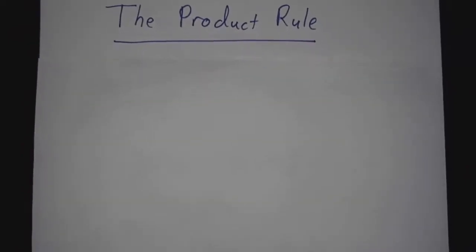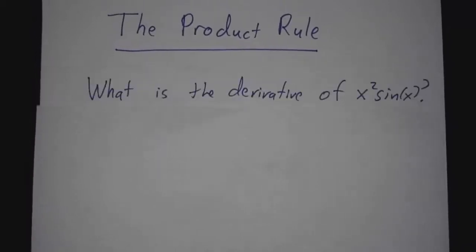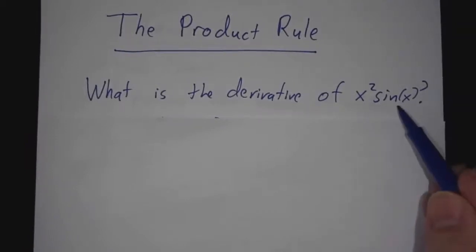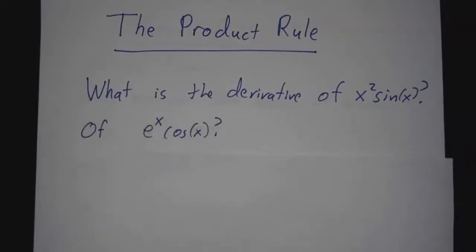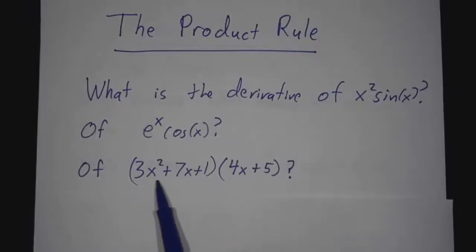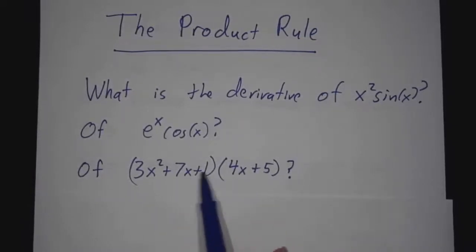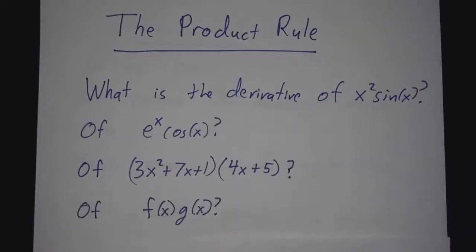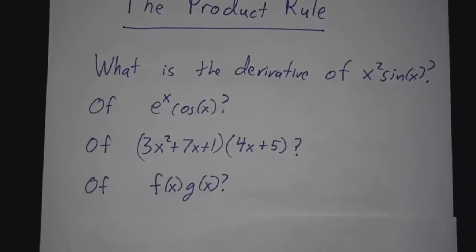In particular, let's suppose we want to know the derivative of x squared times sine of x. We know the derivative of x squared, and we know the derivative of sine of x, but what's the derivative of x squared times sine of x? Or maybe e to the x cosine of x. Or maybe a product of two ugly polynomials — each one is easy to differentiate, but what about the product? In general, if you have two functions f of x and g of x, what's the derivative of their product?